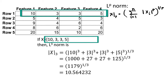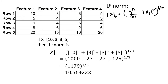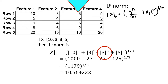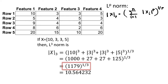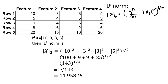That means the square root of 143, which results in 11.95826. What is the L3 norm of the same vector [10, 3, 3, 5]? The L3 norm is |10|^3 + |3|^3 + |3|^3 + |5|^3, which results in 1000 + 27 + 27 + 125 = 1179. Now take the power of 1/3, or cubic root of 1179, which is 10.564232.